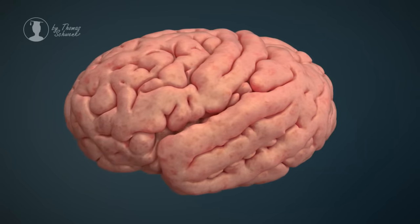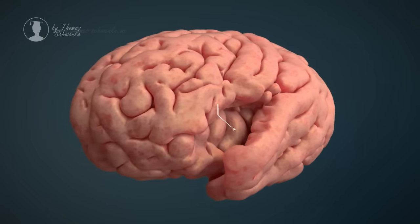The insular cortex can be found under the frontal, parietal, and temporal lobes.